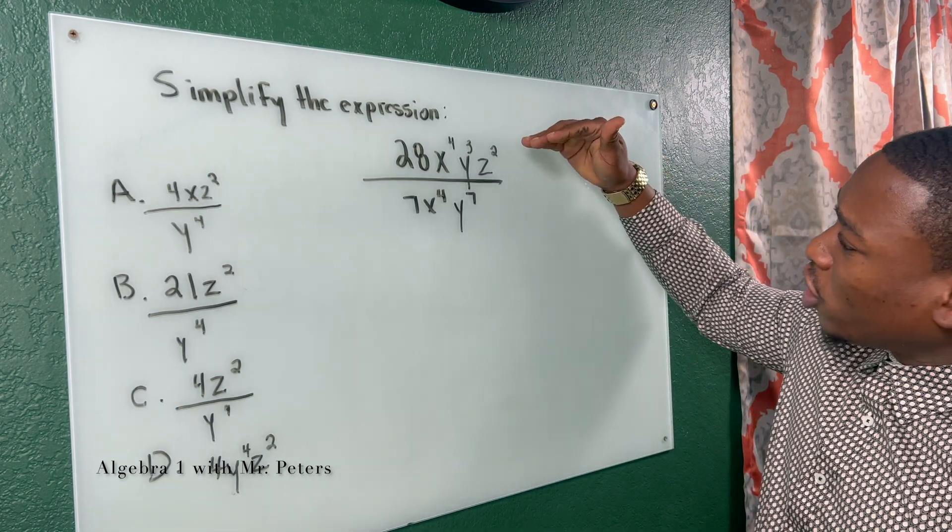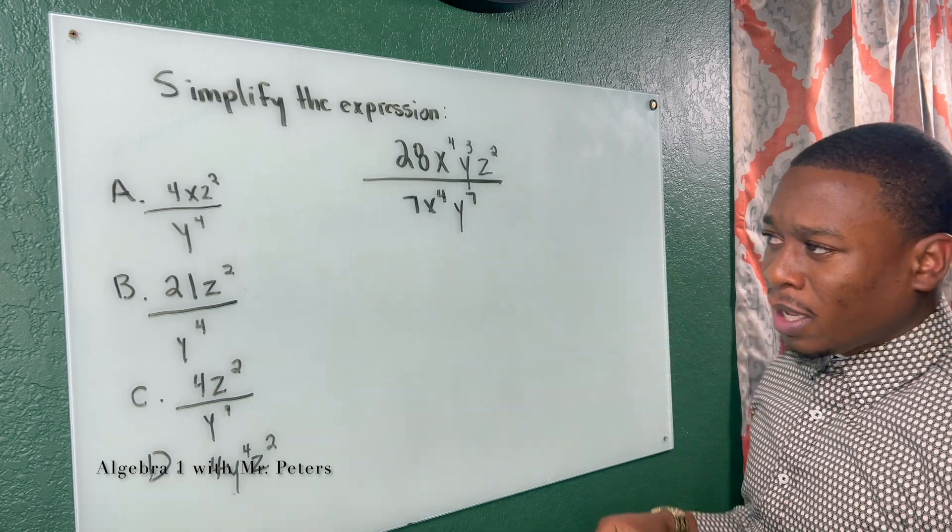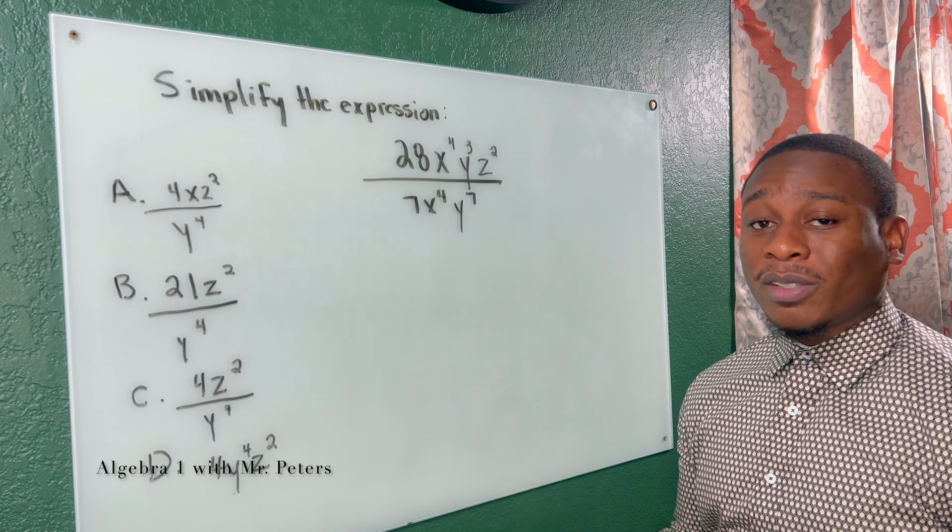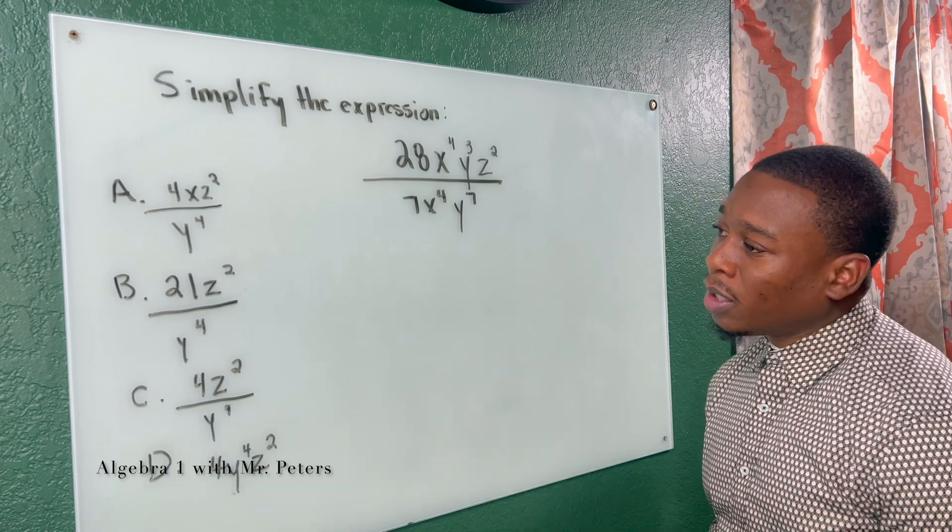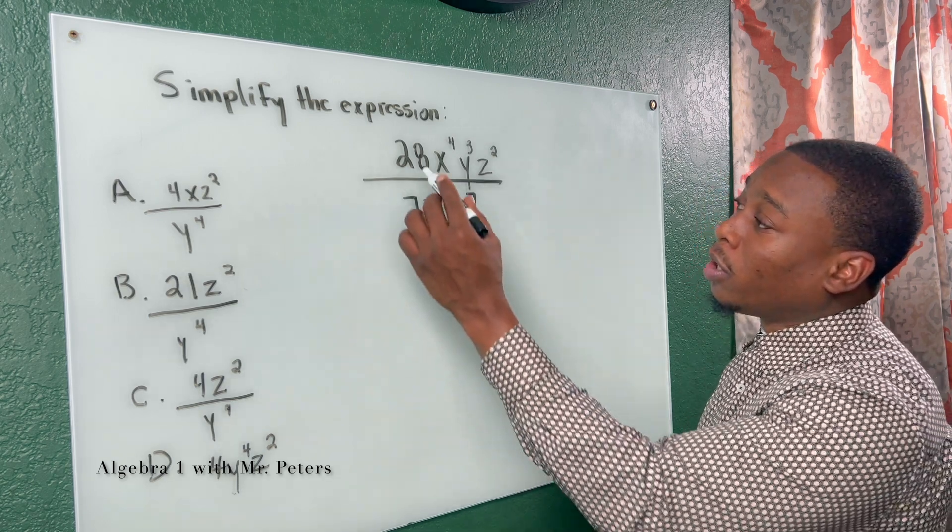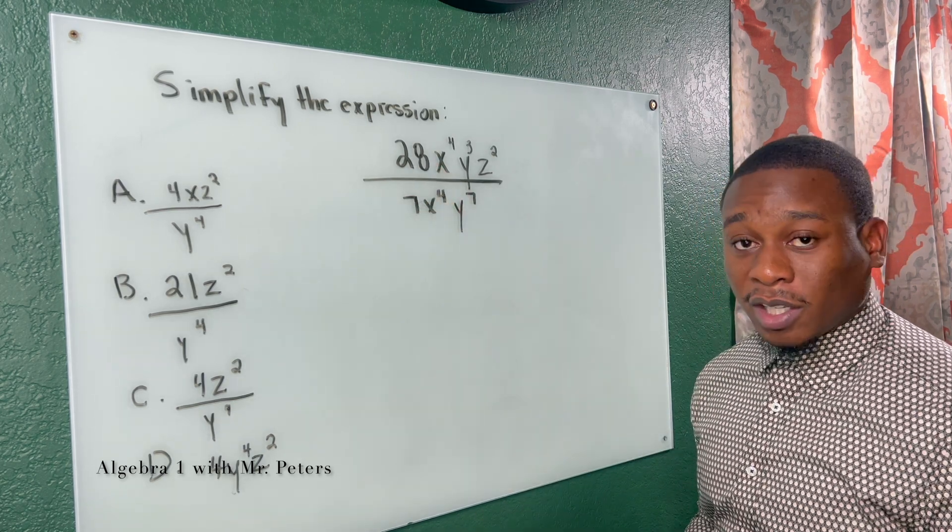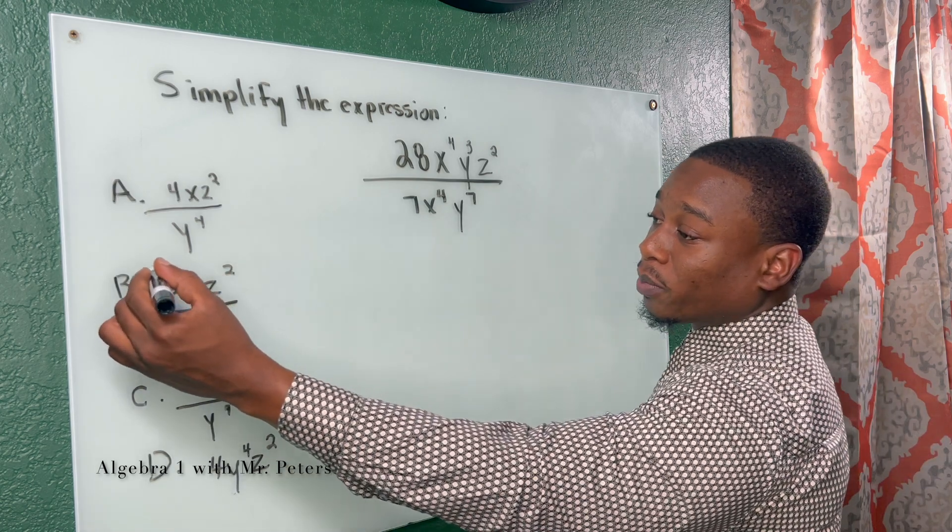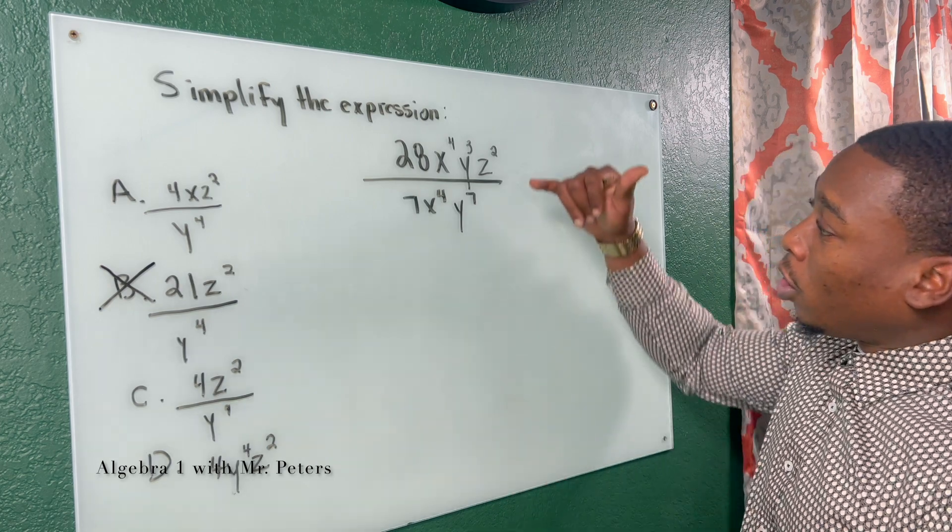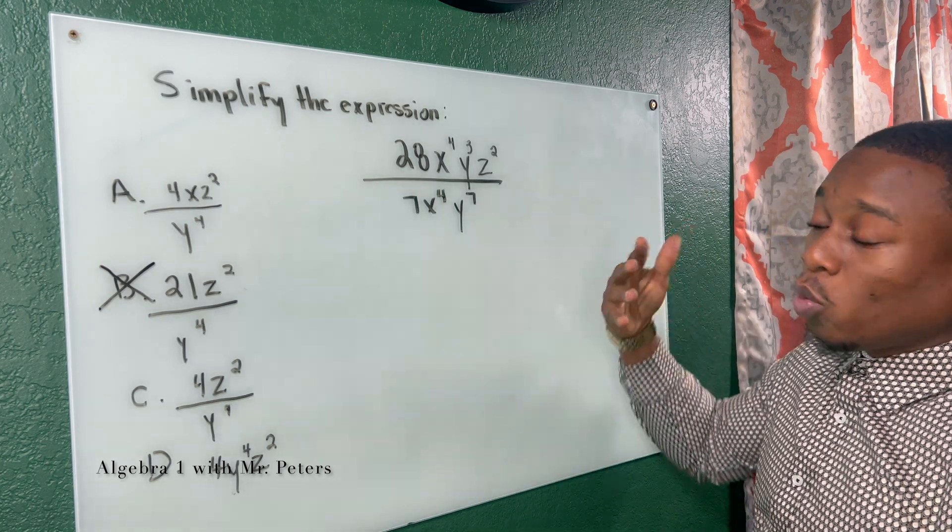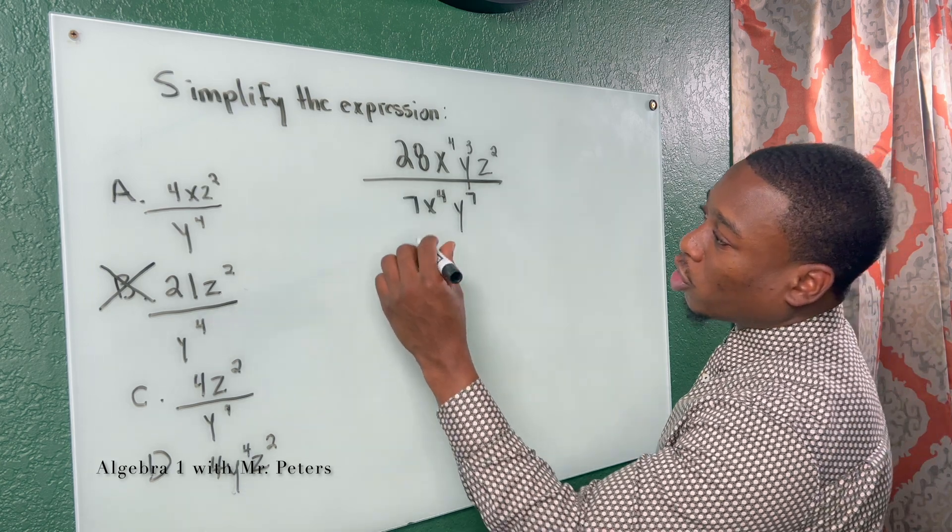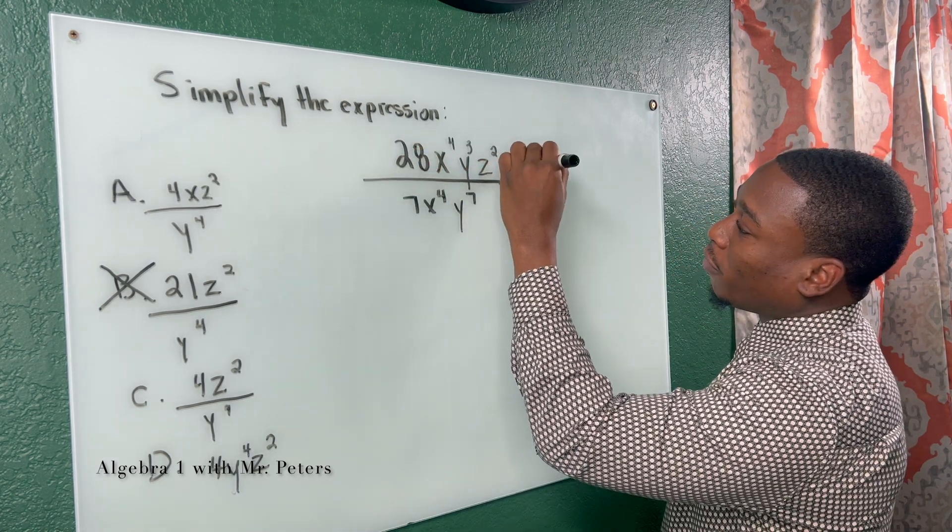So now we have a fraction where we have variables and exponents. And the polynomials are so challenging at times because of those properties of exponents. But I got you. So the first thing we need to understand is that when we divide, we're probably going to get a whole number. 28 divided by 7 is going to give us 4. So off rip, let's just cancel the others. Now what we need to know is that when it comes to the exponents, we are going to subtract. So let's break this down.